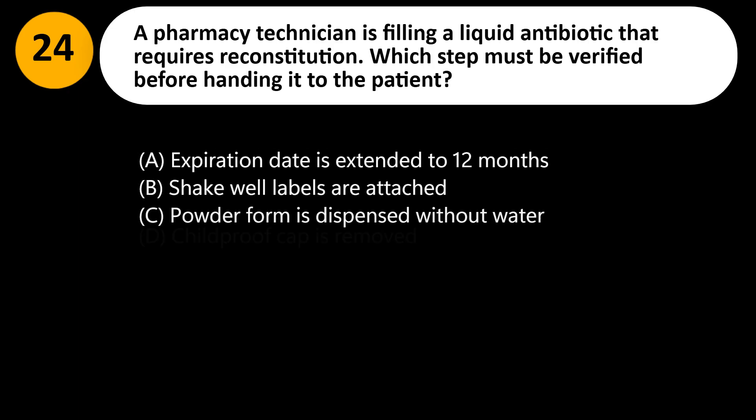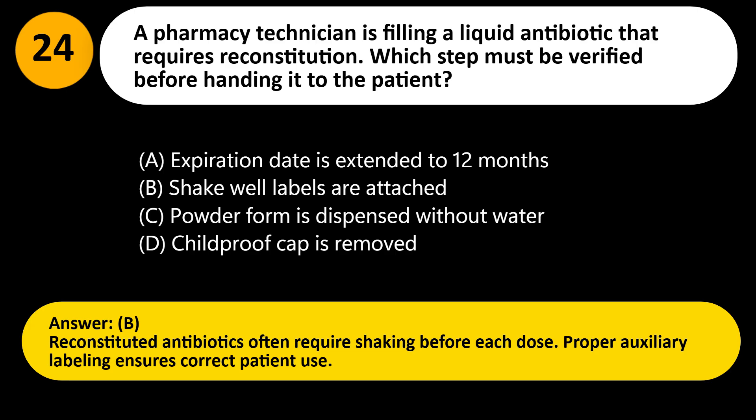A pharmacy technician is filling a liquid antibiotic that requires reconstitution. Which step must be verified before handing it to the patient? A. Expiration date is extended to 12 months. B. Shake well labels are attached. C. Powder form is dispensed without water. D. Childproof cap is removed. Answer: B. Reconstituted antibiotics often require shaking before each dose. Proper auxiliary labeling ensures correct patient use.